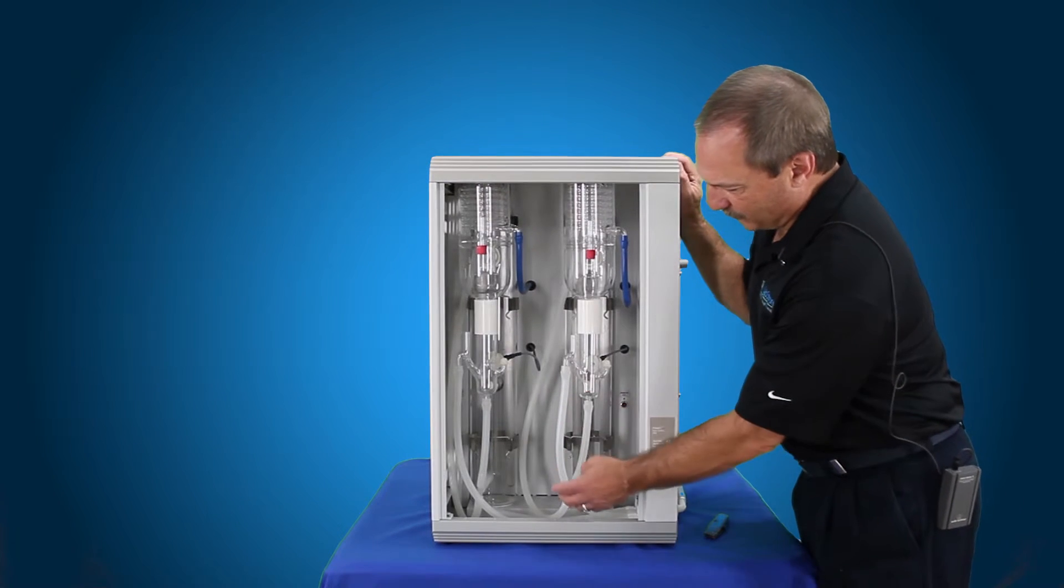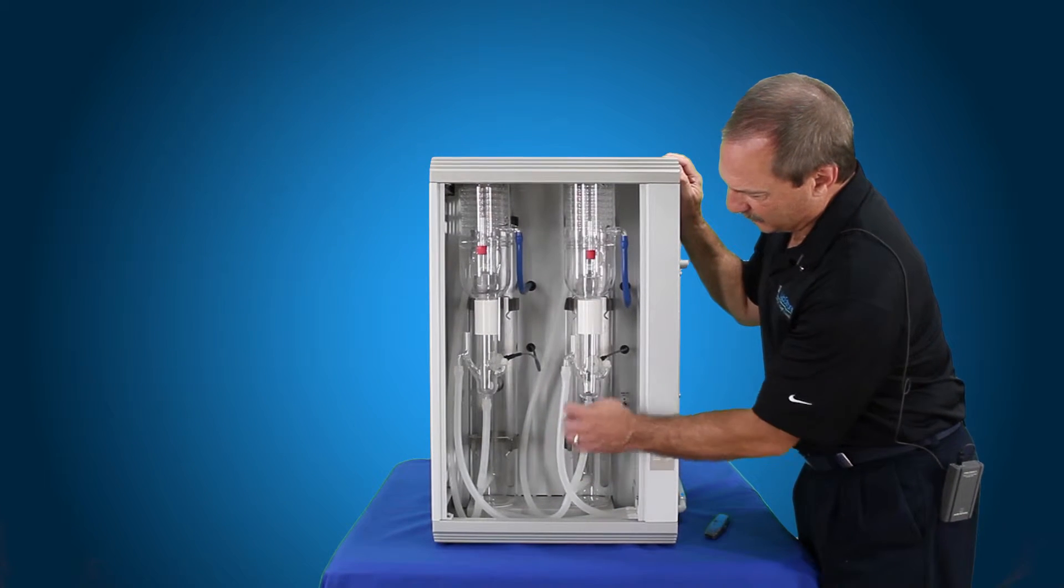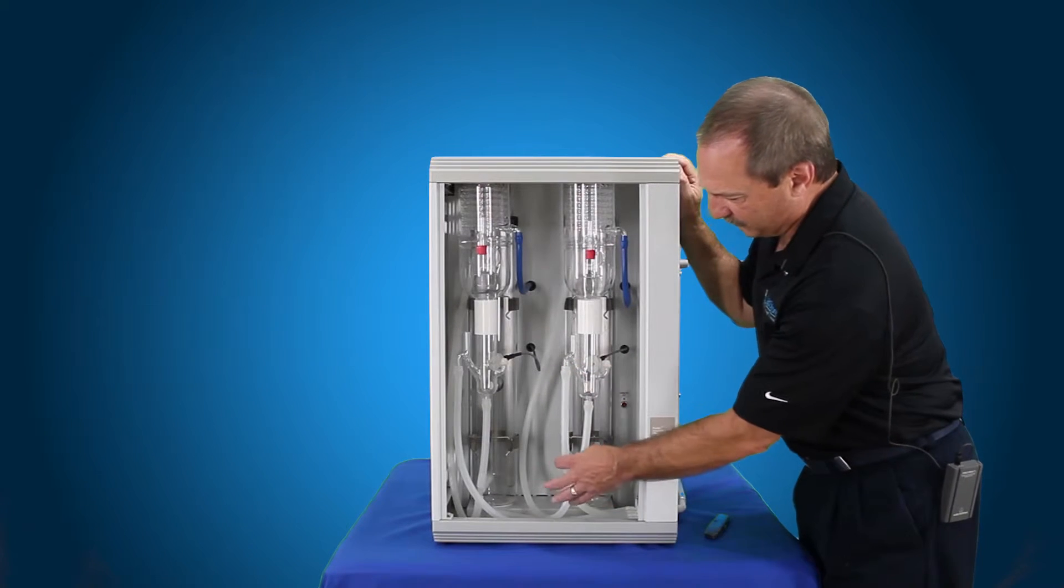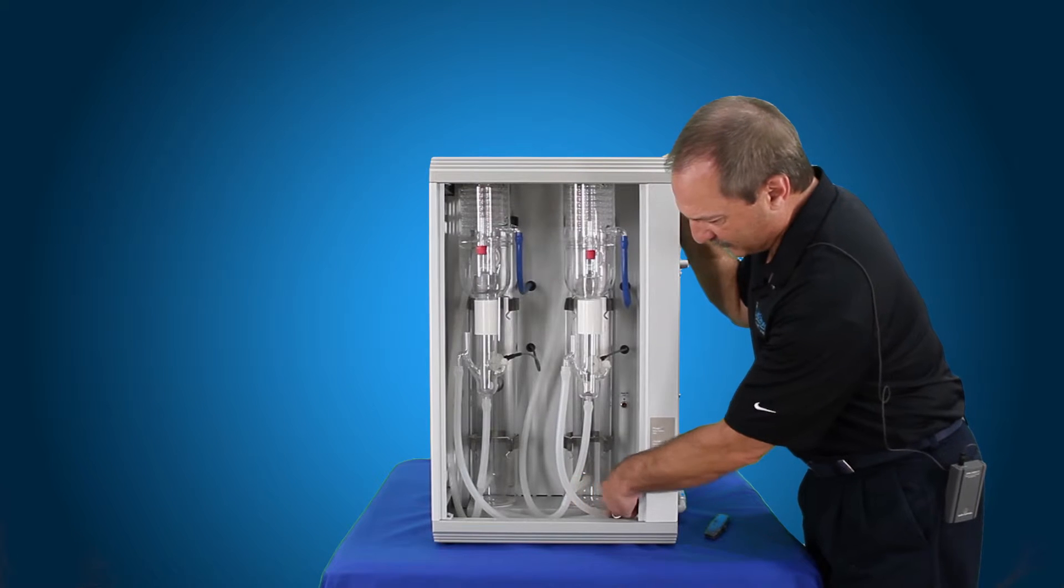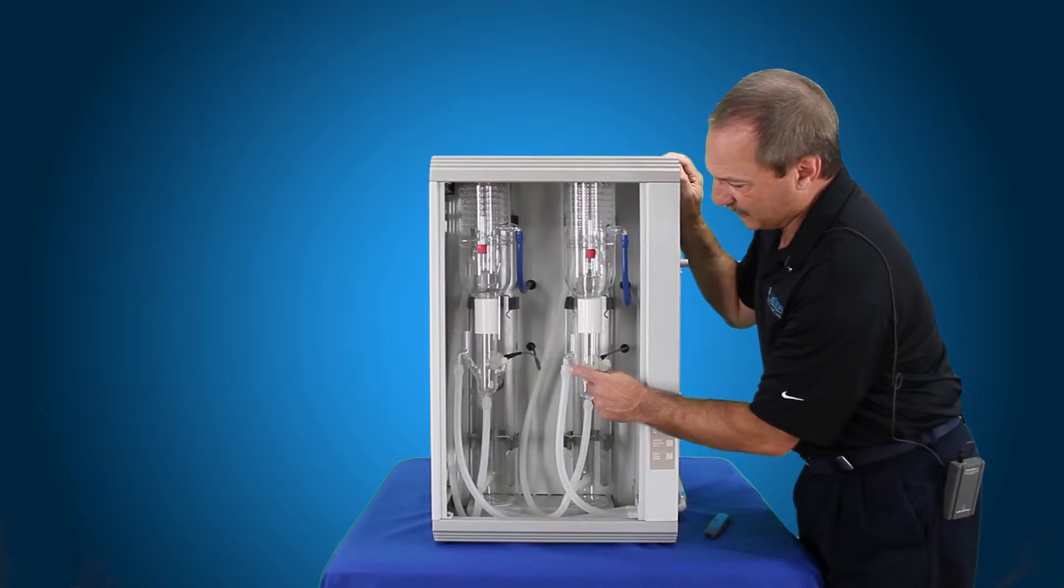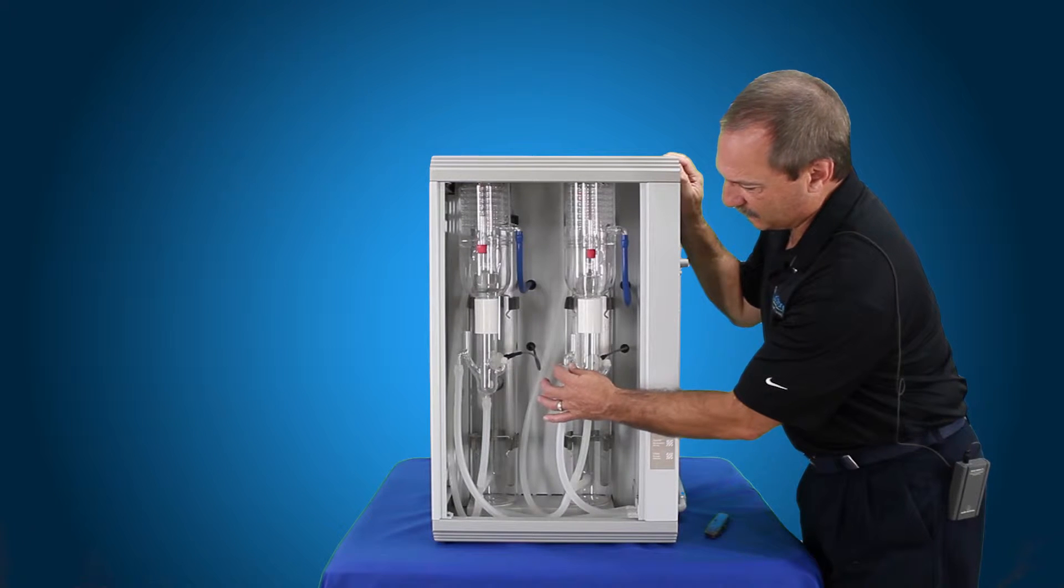Now what we're going to do is replace the overflow tubing from the constant level device that goes down to the drain valve assembly. This is a very easy piece to take off at the drain valve assembly because this does not get that hot, but at the glass right here the silicone tubing will adhere itself to the glass.